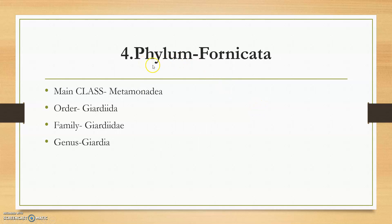The fourth phylum is phylum Fornicata. The main class in this phylum is Metamonadea, the order is Diplomonadida, the family is Giardiidae, and the genus is Giardia. The class and order names are a little difficult, but we have to study them — everybody makes mistakes with these.